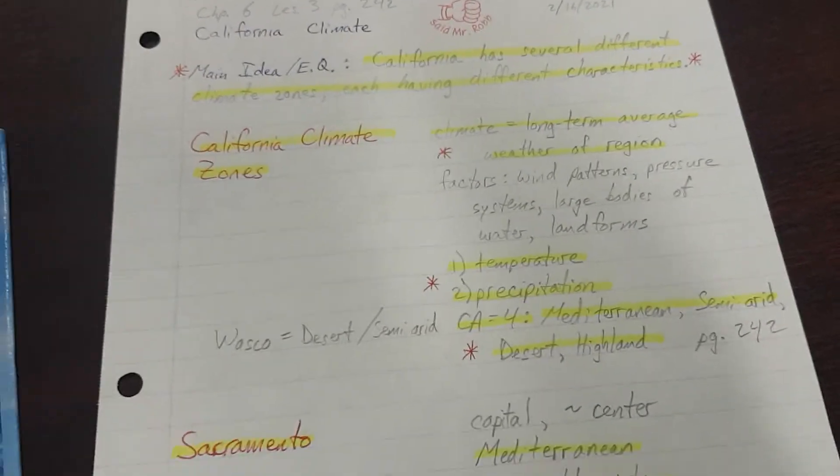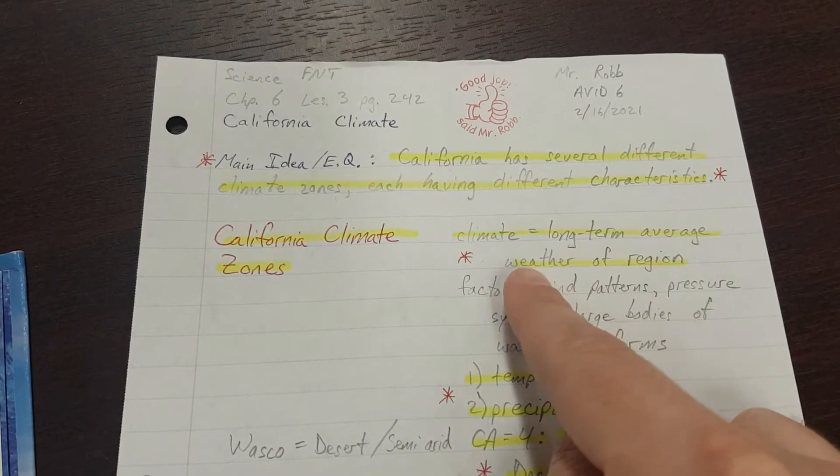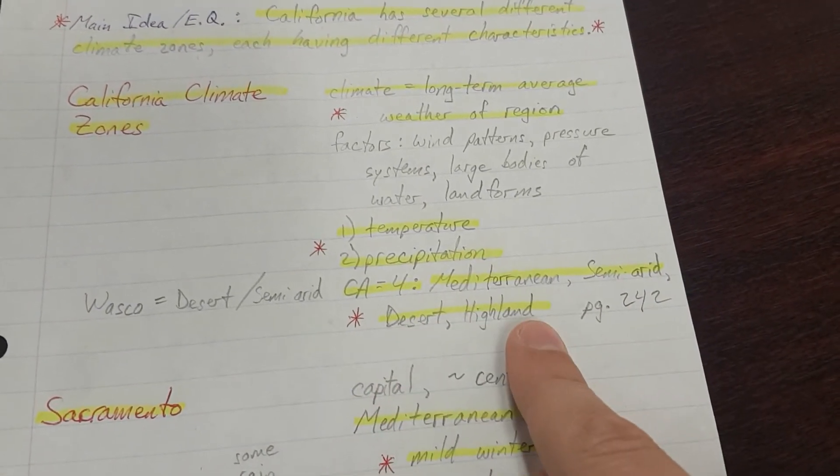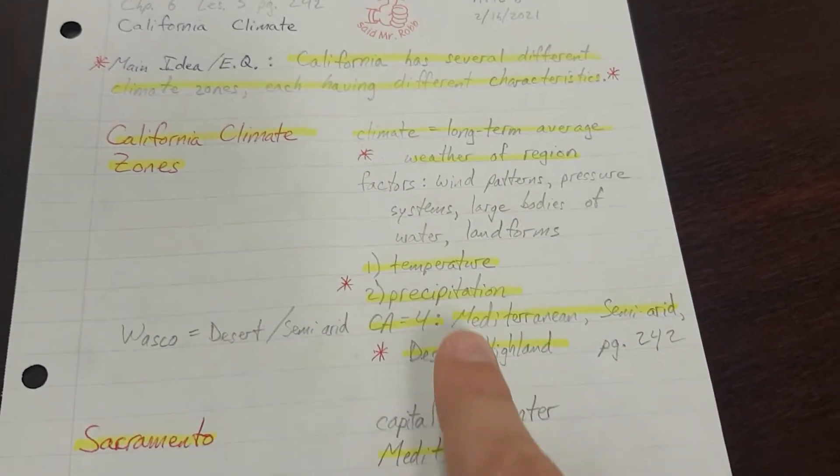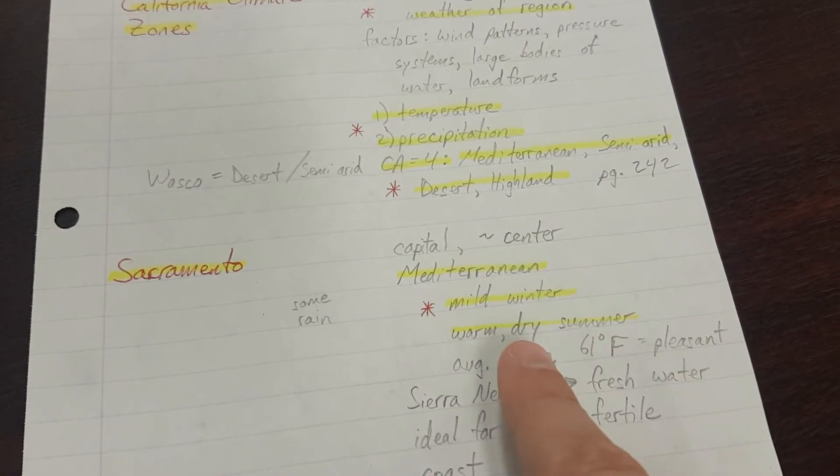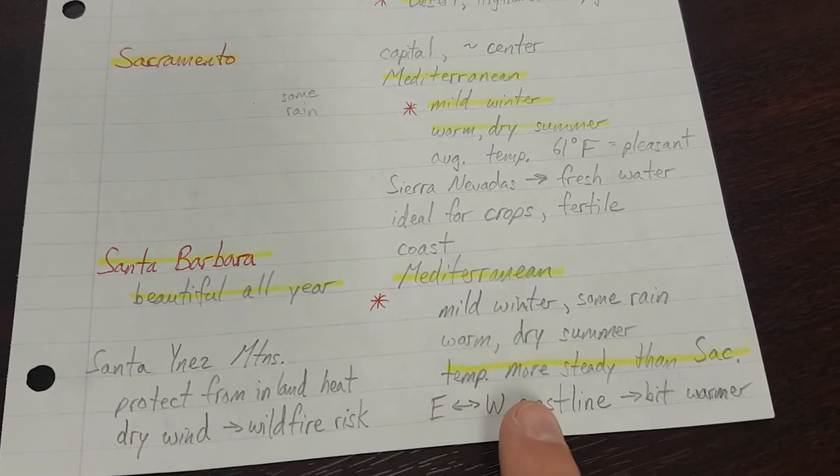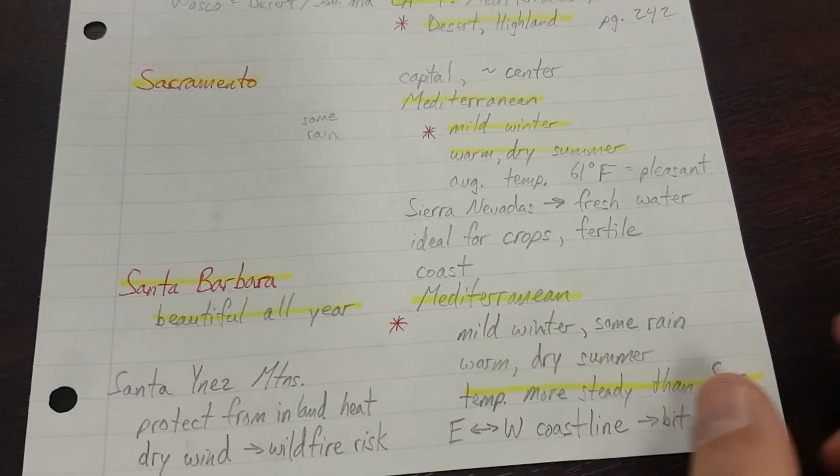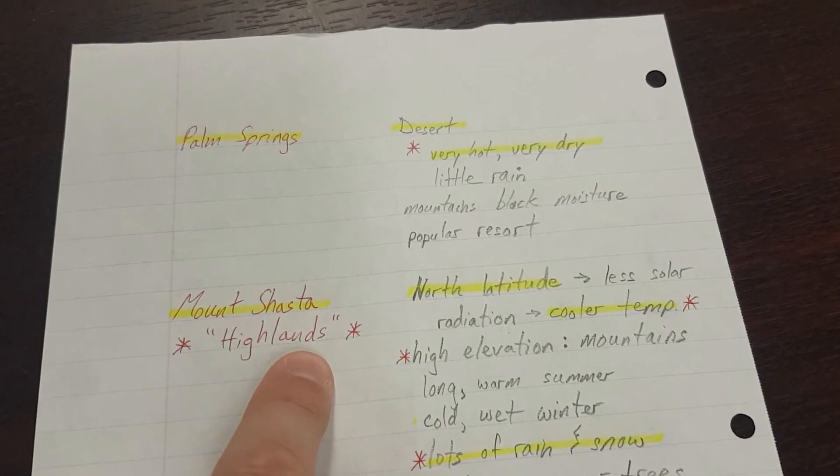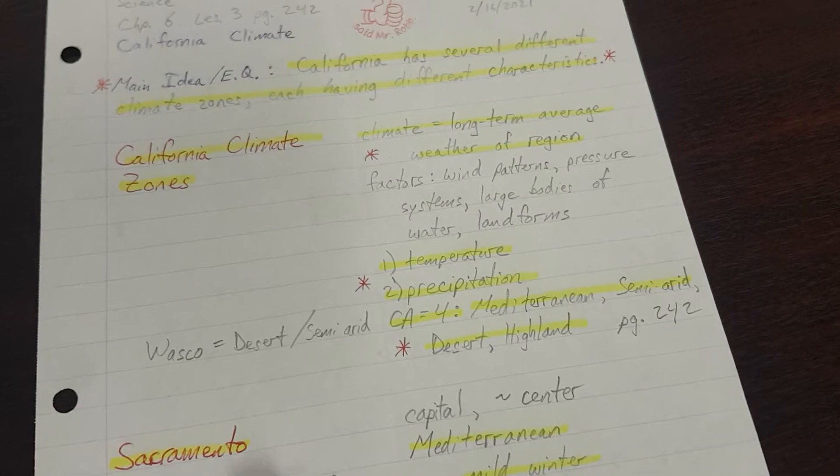Phase four, the summary paragraph. All right, let's kind of talk through it. California has several different climate zones, each having different characteristics. Climate is the long-term average weather of a region. The California zones, or the zones in California, are Mediterranean, semi-arid, desert, and highland. We describe the zones based on temperature and precipitation. Places like Sacramento and the Central Valley have a Mediterranean climate, with a mild winter and a warm, dry summer. Places like Santa Barbara along the coast also have a Mediterranean climate, but tend to have a more steady temperature, so they're beautiful all year. Palm Springs has a desert climate, so it's very hot and dry. And the California highlands are high in elevation, so they're colder and have a lot more rain and snow. There's an example of how you might walk your way through the summary paragraph.